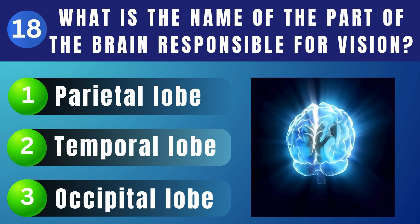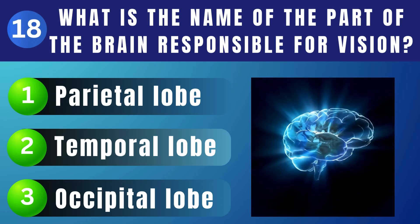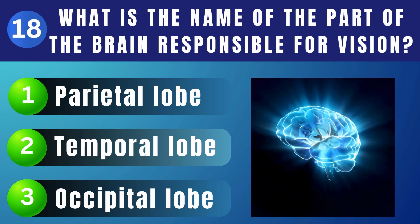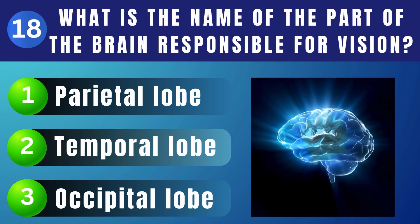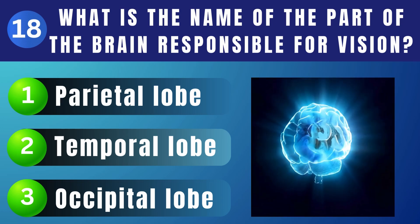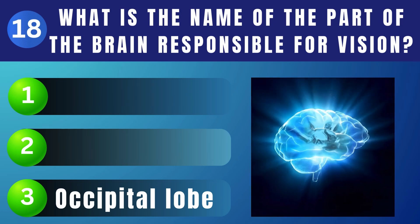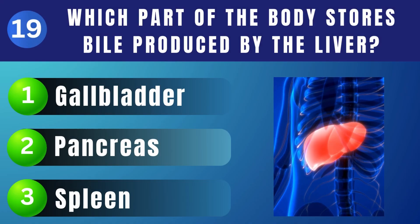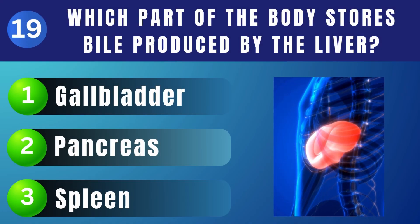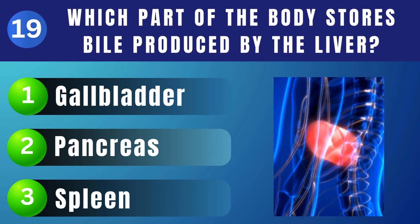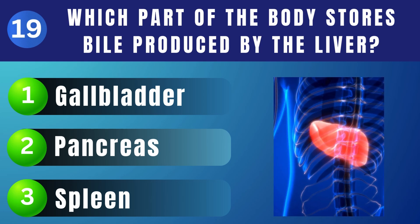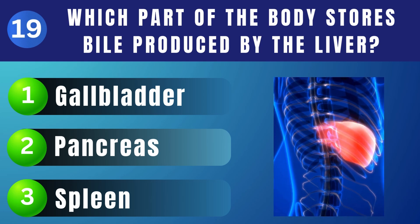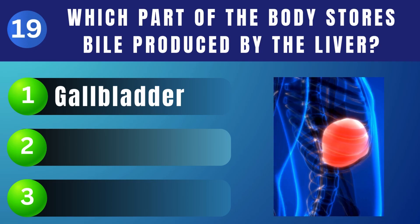What is the name of the part of the brain responsible for vision? Occipital lobe. Which part of the body stores bile produced by the liver? Gallbladder.